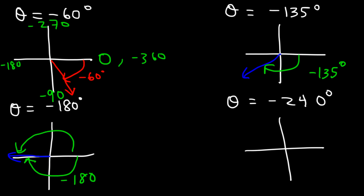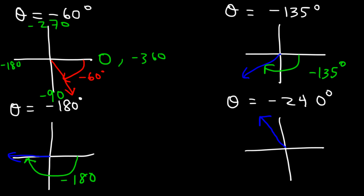Positive 180 would end up in the same location as negative 180, but you would draw the angle rotating counterclockwise. For negative 240: it's in quadrant 2, between negative 180 and negative 270, but closer to negative 270. So it should be somewhere in that vicinity — this is negative 240 degrees. Now you know how to plot positive and negative angles in degrees on an XY rectangular coordinate system.